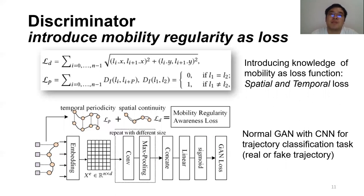The utilized mobility regularities are spatial continuity and temporal periodicity. Due to the limitation of travel modes, the displacement distance of an individual in a fixed time window is limited — we call this spatial continuity. Due to the regularity of human life, the location visiting of an individual across different days is also highly periodic — we call this temporal periodicity. Spatial continuity loss is implemented to calculate the physical distance between nearby trajectory points, and temporal periodicity loss is implemented to calculate the identity loss between regular points from different days but within the same hour of day.